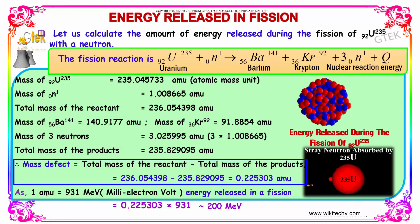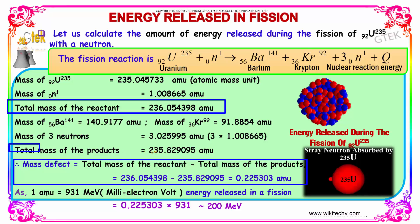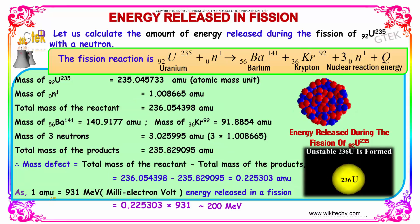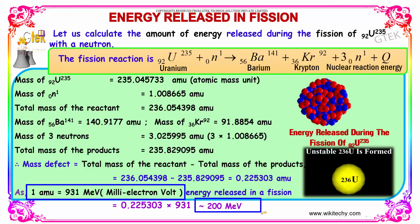The mass defect is given by the total mass of the reactants minus the total mass of the products, giving 0.225303 amu. Since 1 amu equals 931 MeV, multiplying 0.225303 by 931 gives approximately 200 MeV as the energy released.